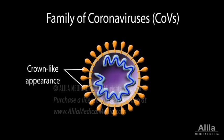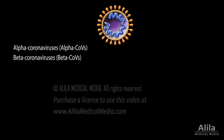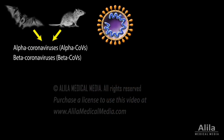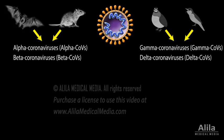Coronaviruses are a large family of enveloped RNA viruses. There are four groups of coronaviruses: alpha and beta, which originated from bats and rodents, and gamma and delta, which originated from avian species.